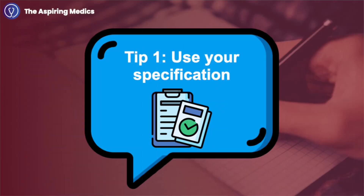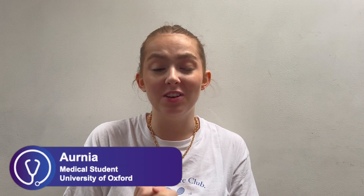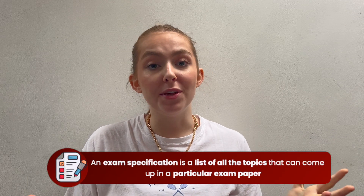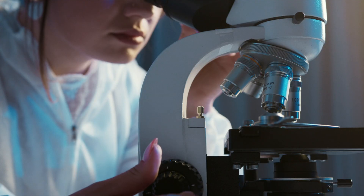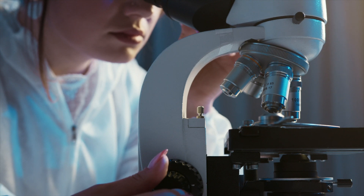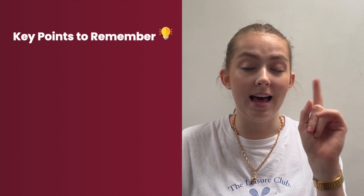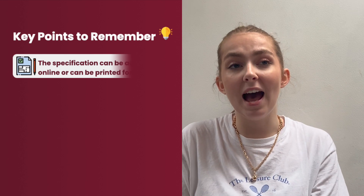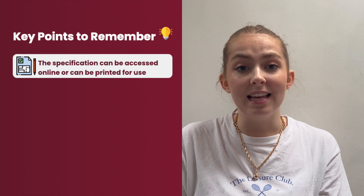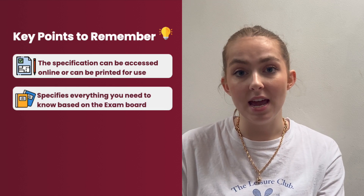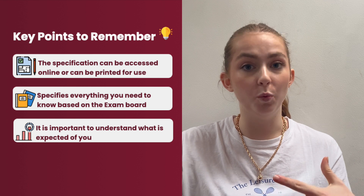The very first tip I think all A-level biology students should know is: use your specification. Your specification is going to be your best friend. If you don't know what the specification is, it's a really long document that can be found on the examiner's website. For example, I did AQA A-level biology — you just go onto the AQA website, find the biology course, and there is a specification. It gives you every single thing that can be examined in one document.